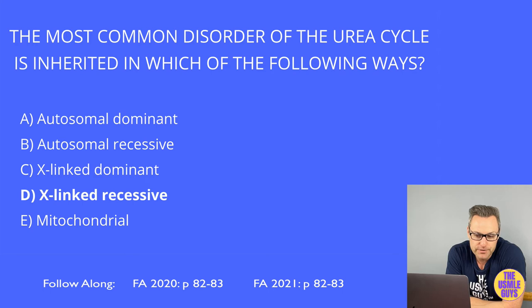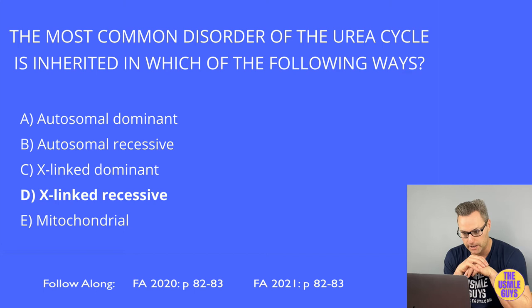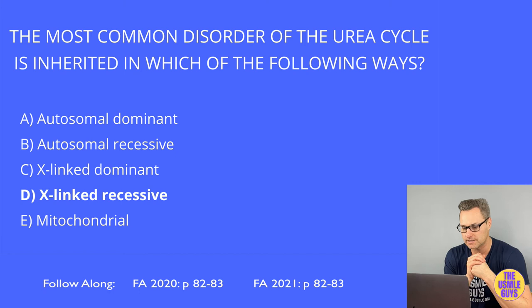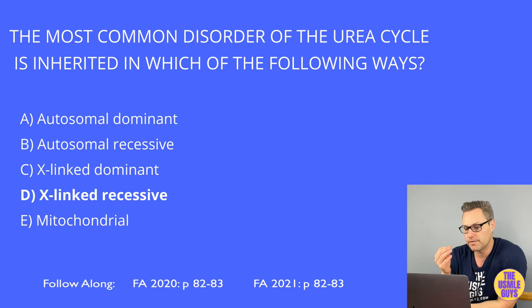A deficiency of ornithine transcarbamoylase leads to a buildup of ammonia in the blood. This enzyme deficiency is inherited in an X-linked recessive manner and results in lethargy, ataxia, asterixis, slowing of speech, and even death. This is the most common urea cycle disorder, and while it's X-linked recessive, all other urea cycle disorders are inherited in an autosomal recessive manner — don't fall for this trap on your exam.